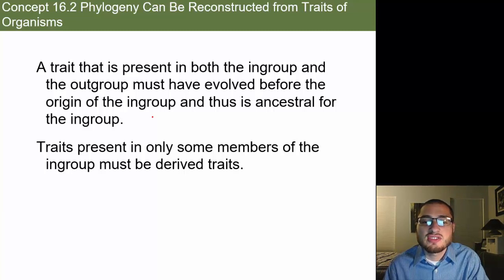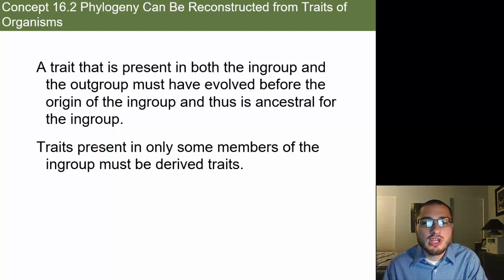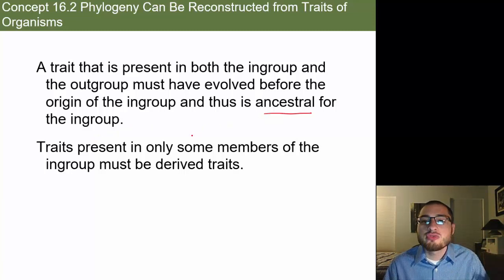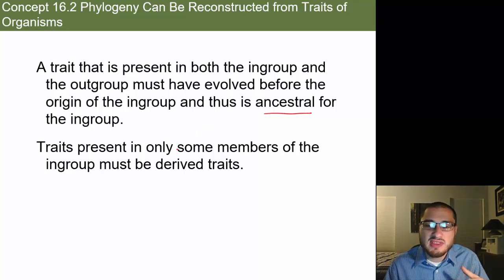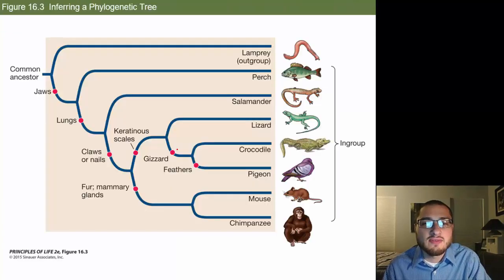A trait present in both the in-group and the out-group must have evolved before the origin of the in-group and is thus ancestral for the in-group. Something the lamprey has would be an ancestral trait. If a trait is part of just the in-group, it's a derived trait. Traits present in only some members of the in-group must be derived traits — they came along afterwards, and only some individuals in the in-group have them.